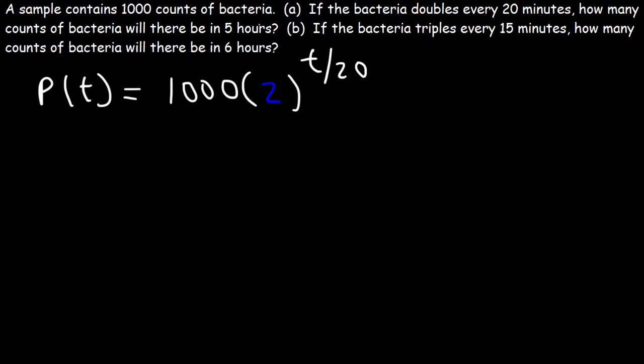But we want to know how many bacteria, or counts of bacteria, there's going to be in 5 hours. So we want T in hours. So if it doubles every 20 minutes, how many times does it double in one hour? Well, there's 60 minutes in an hour. And so there's three intervals of 20 minutes within an hour. So if it doubles every 20 minutes, it's going to double three times in one hour. So we can write it as 3T. Because if you plug in 1, 2 to the third is 8, which is 2 times 2 times 2. It's doubling three times in that single hour.